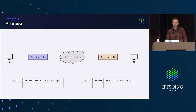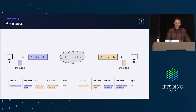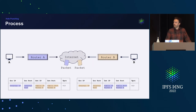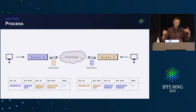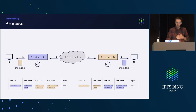Hole punching works as follows: through some mechanism, both peers synchronize a simultaneous connect. In the case of TCP, both issue a SYN packet at the same time, both routers update their own state tables, the packets cross paths in the internet, reach the other routers, and both routers see they just sent a packet and are expecting one — so they let them through, and both peers are connected.